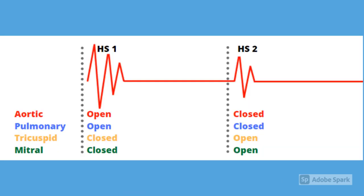During systole, the mitral and the tricuspid valves are closed, and the aortic and the pulmonary valves are open. During diastole, the reverse is true: the aortic and the pulmonary valves are closed, and the mitral and tricuspid are open.